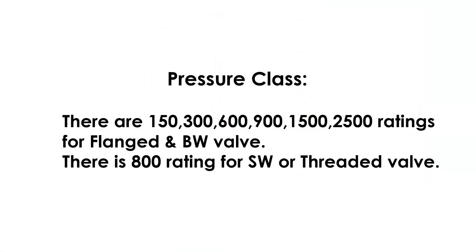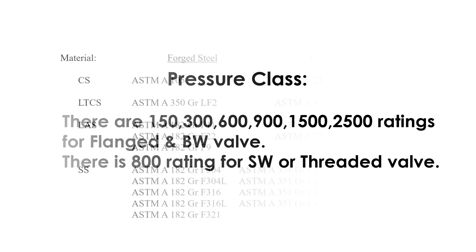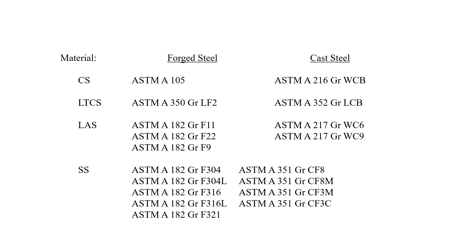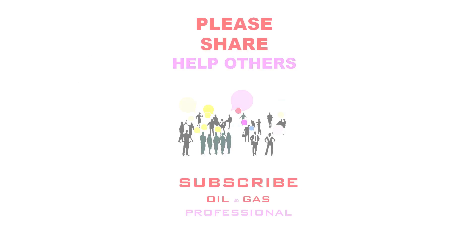Pressure classes for globe valves: there are 150, 300, 600, 900, 1500, and 2500 ratings for flanged and butt-weld valves. There is an 800 rating for socket-weld and threaded valves. For globe valve materials, please refer to the table showing the 800 rating and other details.